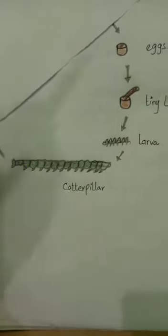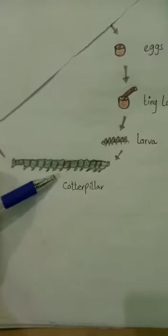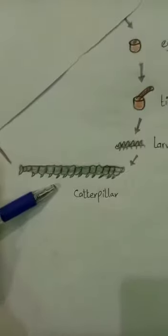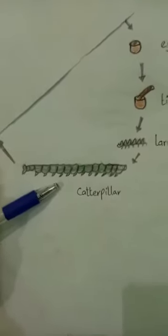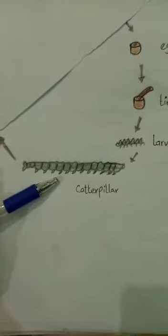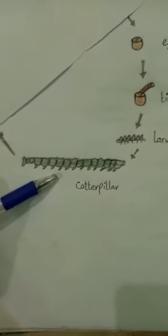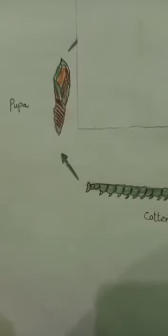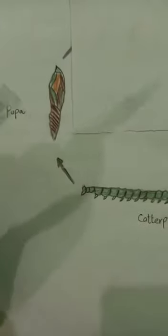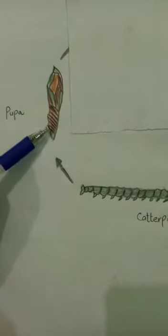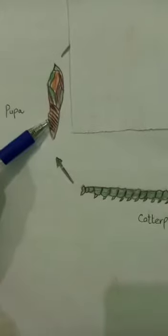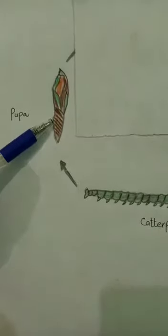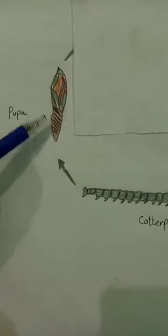Next step, students, you have to draw a caterpillar — a complete caterpillar. After that, what is the pupa? This is the pupa — this is the shell of a caterpillar. After that, we call it pupa.